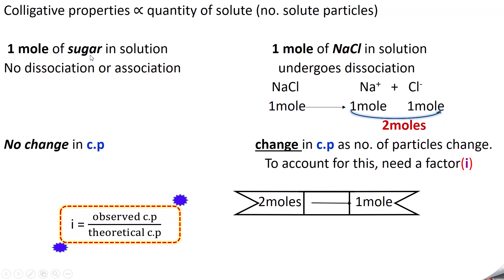Suppose you take one mole of sugar and put it in solvent. When you examine the solution, the quantity of solute particles present is found to be one mole. What we have added is one mole, and what is in the solution is also one mole of sugar, because sugar does not undergo dissociation or association. Since the number of particles does not change, there will not be any change in colligative property.